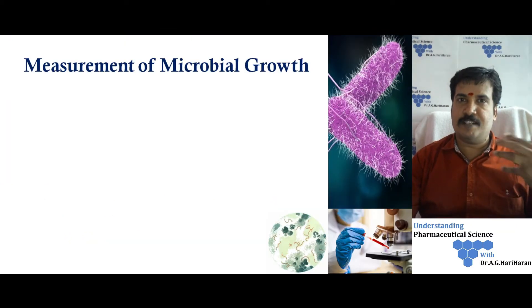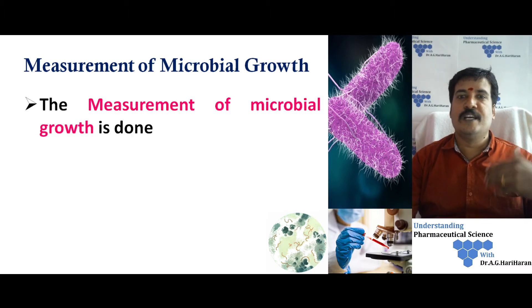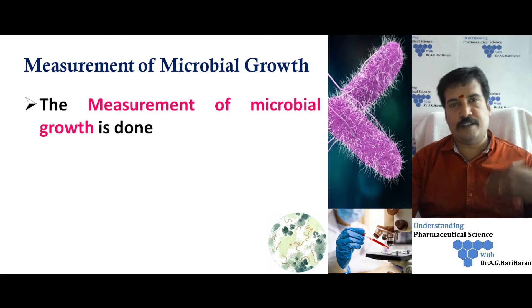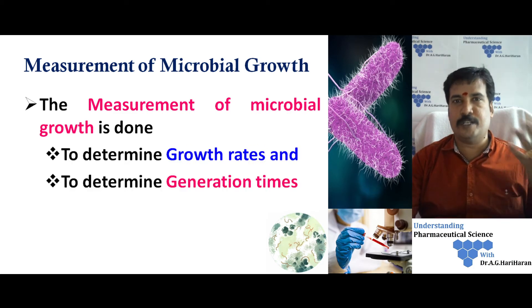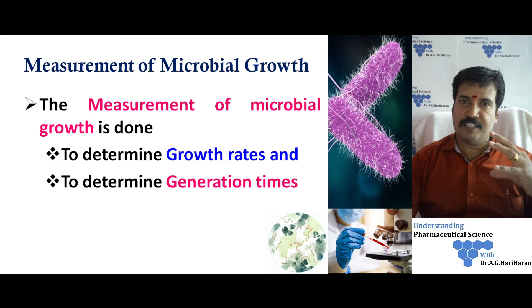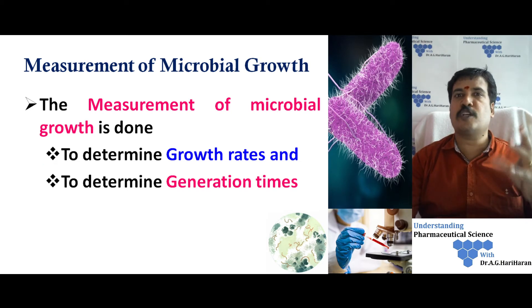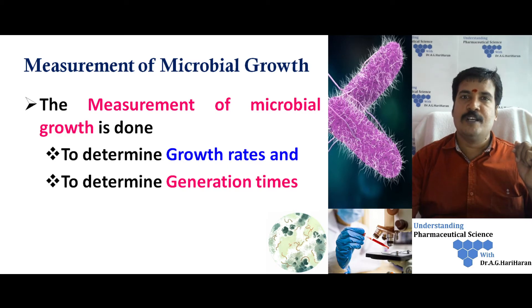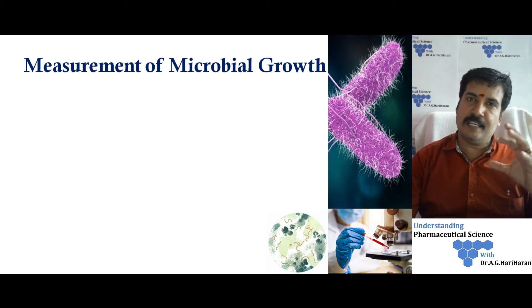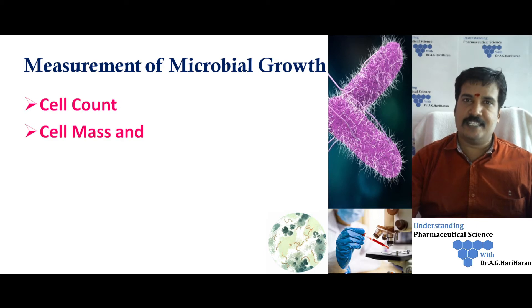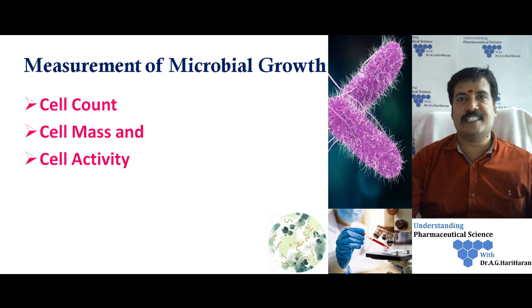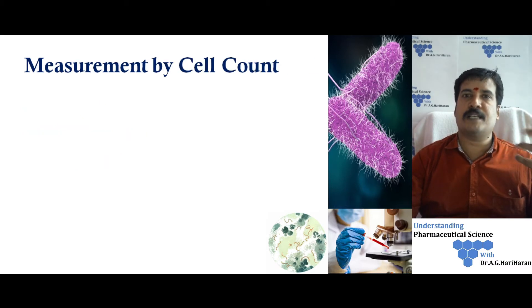Generally, the measurement of microbial cell or microbial growth is done for calculating the growth rate of a particular microorganism or to determine the generation times. For these two purposes, the enumeration of microorganisms is generally carried out. There are basically three major techniques employed for the measurement of microbial growth: cell count, cell mass, and cell activity. The most commonly used is the measurement of cell count.